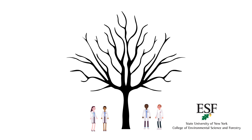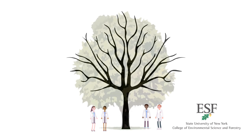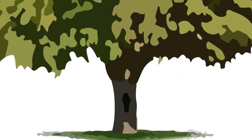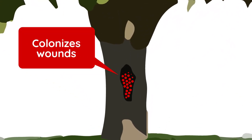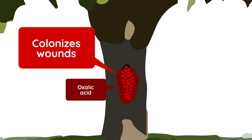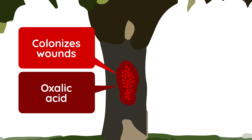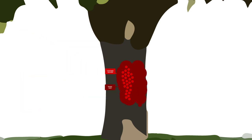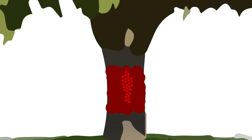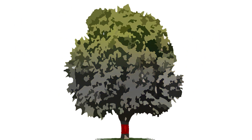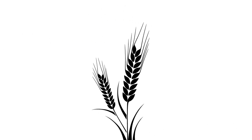Here's how it works: the chestnut blight fungus colonizes wounds in the tree and then produces oxalic acid, a toxin that kills the tree's cells. The fungus, which eats the dead tissue, spreads and forms cankers that eventually girdle the tree. Circulation is cut off and everything above the canker dies.